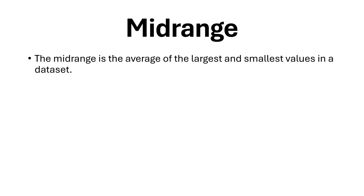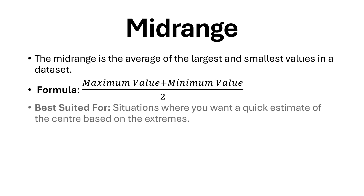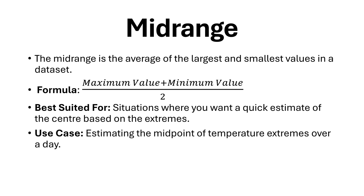The midrange is the average of the largest and smallest values in a dataset. The formula is as shown. Best suited for situations where you want a quick estimate of the center based on the extremes. Use case: estimating the midpoint of temperature extremes over a day.